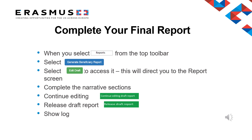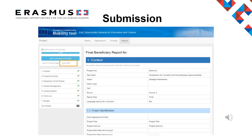When you select Reports from the top toolbar, select the Generate Beneficiary Report button. If you haven't added any costs, this will display as termination, no grant. Select Edit Draft to access the report screen and complete the narrative sections. You can revisit your report at any time prior to submission by clicking on the Reports tab. You can either continue editing the draft report or release the draft report for others to report. The Show Log button provides a record of access on the project. The left-hand side of the reports page provides access to your narrative report and an indication of your progress.